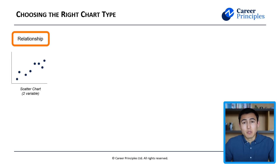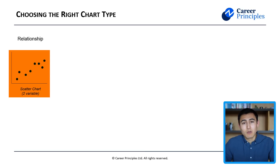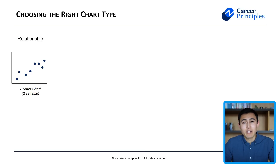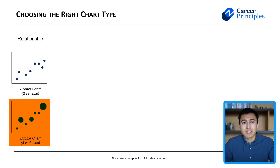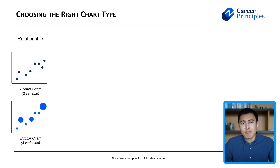As you probably know, there's a ton of different options out there. For any kind of relationship, you might want to consider a scatter plot, or alternatively, if you have more than two variables, maybe a bubble chart can make sense, where the bubble itself represents the third variable.